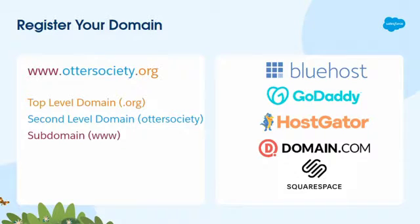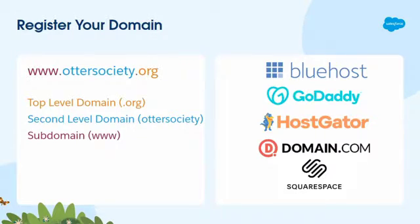Domain names are made up of three parts working backwards. You have your top-level domain — that's going to be your .org, your .com, etc. Your second-level domain is the name you've chosen, in this case the 'ottersociety' part. Those two together are a domain name. You can also add what's called a subdomain — many of those are 'www,' or like commons.cdss.org. If you have a subdomain, a second-level domain, and a top-level domain, that's what's called a fully qualified domain name, or FQDN, and you need one of those to set up a custom domain.